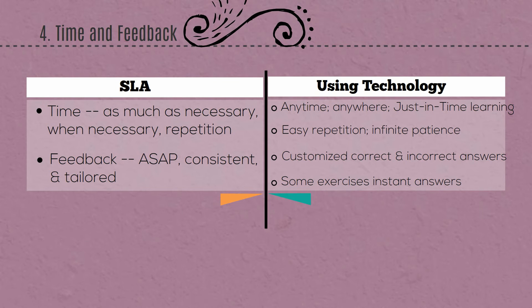The best feedback is tailored to the student. Just noting correct or incorrect is not as useful as letting them know why it is correct or incorrect. Technology assists with this — it is well on its way to being available anytime and anywhere, which means it can be there for the student when the student is ready to learn instead of when the teacher is ready to teach. Online exercises are easy to repeat, and technology has infinite patience.